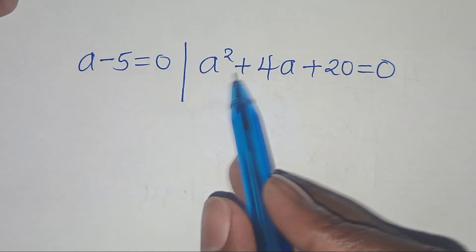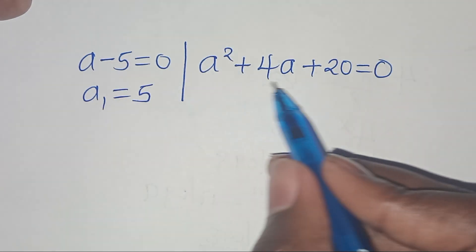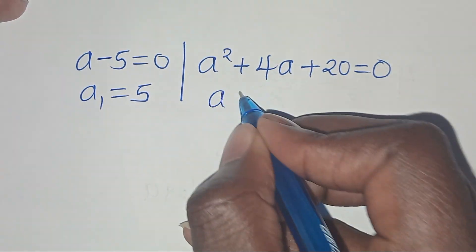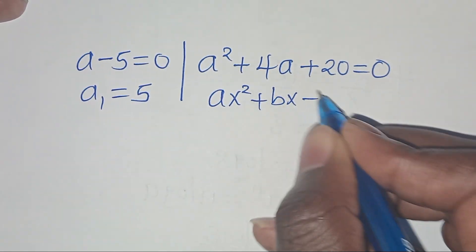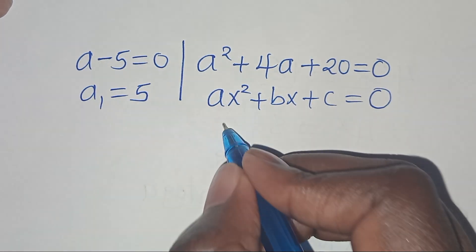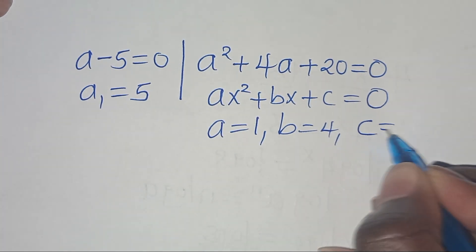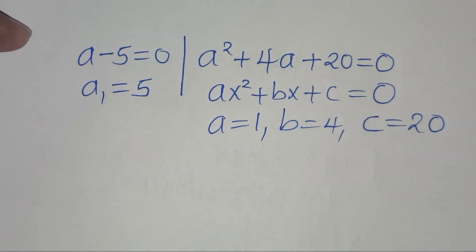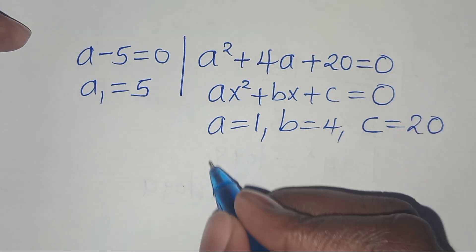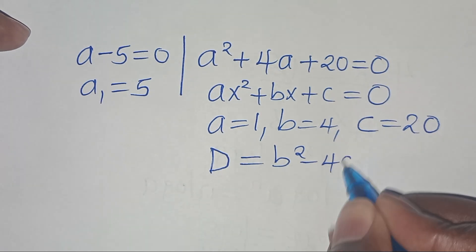From the first part, we have that a₁ is equal to 5. From the second part, this is a quadratic equation of the form ax squared plus bx plus c equals 0. From this quadratic equation, we have that a is equal to 1, b is equal to 4, and c is equal to 20. We can determine the nature of the roots by determining the discriminant value, which is b squared minus 4ac.